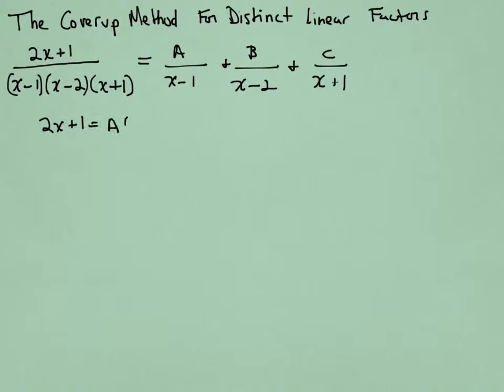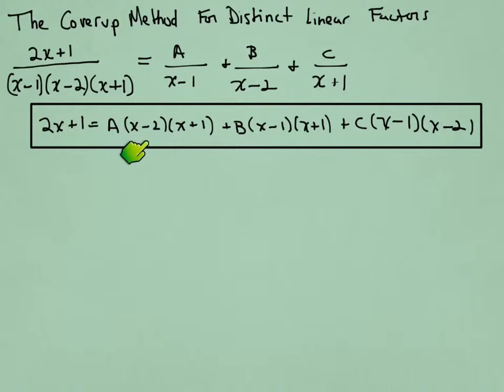To do that, we would clear the fractions, and on the right side, for each term, one factor would cancel and the other two would remain. That would occur in each term: one factor cancels, the other two remain.